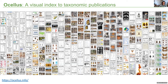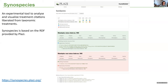One really fascinating thing is the forgotten images in our publications. Suddenly we can do things with figures in publications: build applications, sort them, compare them, and use artificial intelligence to identify them. We can also use treatment citations to build, by machine, the Catalog of Life.